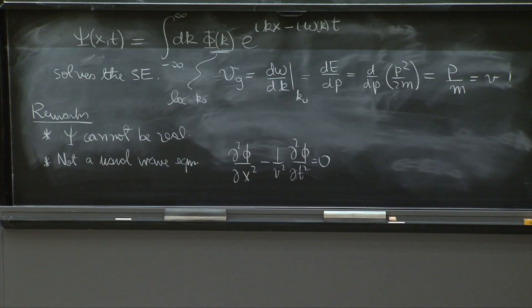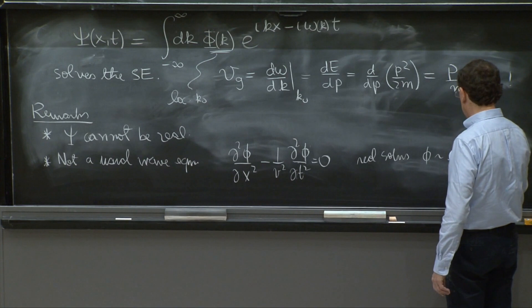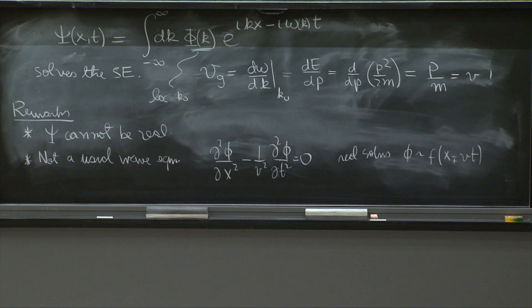And the problem with that wave equation is that it has real solutions, solutions phi that go like functions of x minus vt, plus minus x over vt. And we cannot have those real solutions. So we managed to get a wave, but not from a usual wave equation.